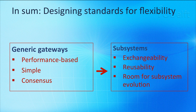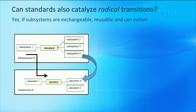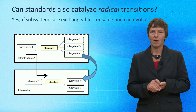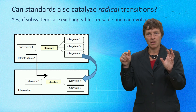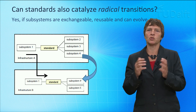A standard's potential to allow more radical change resides, first of all, in the exchangeability of subsystems. This creates flexibility not only in the system at hand, but also makes subsystems reusable in future infrastructures. Second, the loose connection created by generic gateways creates room for subsystems to evolve. This is illustrated in the figure: Subsystem 4 of Infrastructure A has evolved into Subsystem 4 Abstroth and become part of the new Infrastructure B.